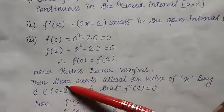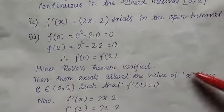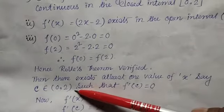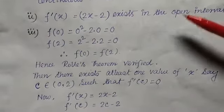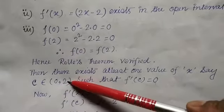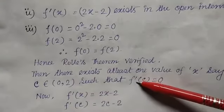Next you will see the statement: then there exists at least one value of x, say c belongs to open interval (0, 2), such that f'(c) = 0. Same condition - you have to find one c which belongs to the given open interval and the condition is f'(c) = 0.